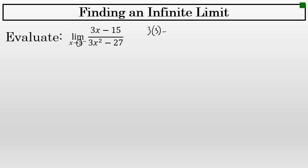In this case, I find that 3 times 3 minus 15, the numerator, is equal to 9 minus 15, or negative 6. And the denominator is equal to 3 times 3 squared, 27, minus 27, which is 0.